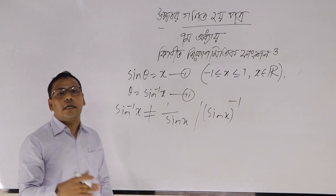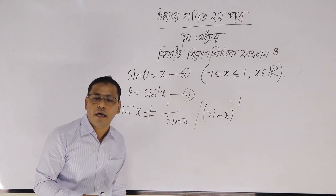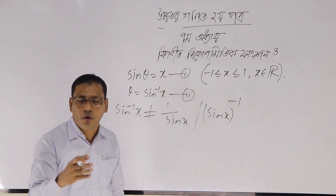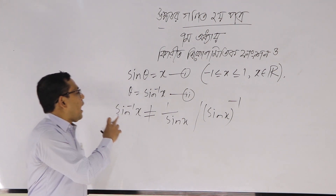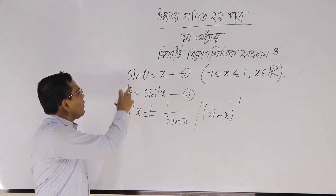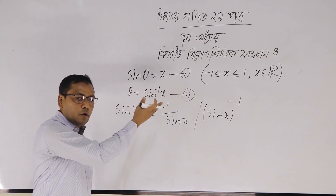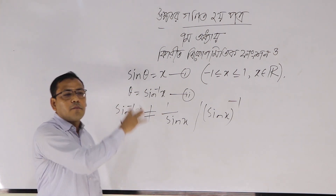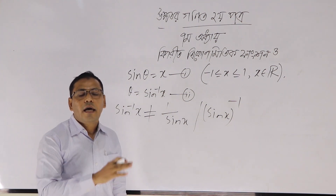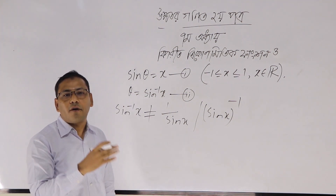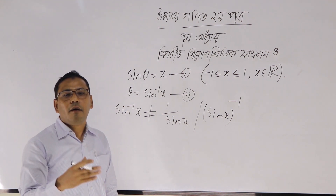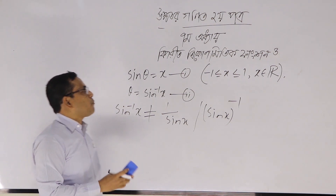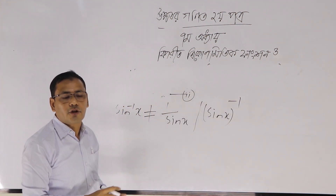We have sec inverse x, cos inverse x — but we are not writing sin inverse x as 1 by sin x. We are learning about the inverse trigonometric functions. So sin inverse x is not equal to 1 by sin x. Similarly, cos inverse x, sec inverse x cannot be written as 1 by cos x or 1 by sec x.